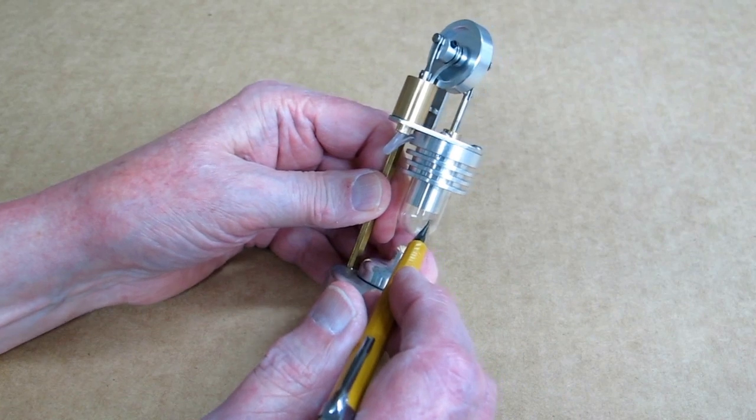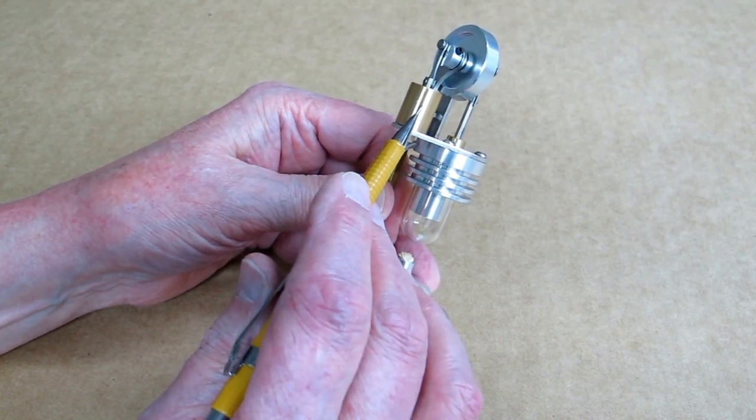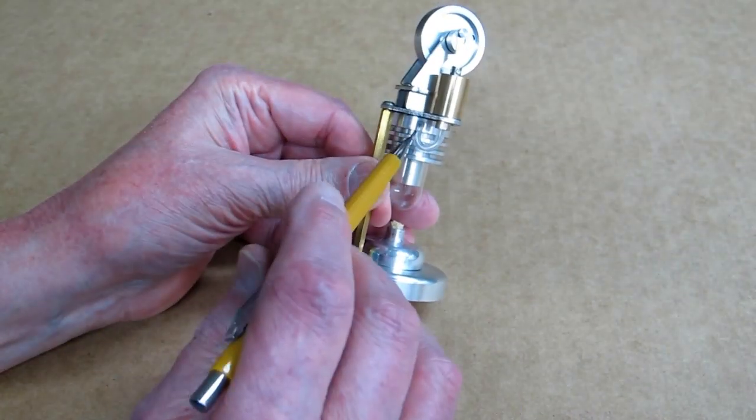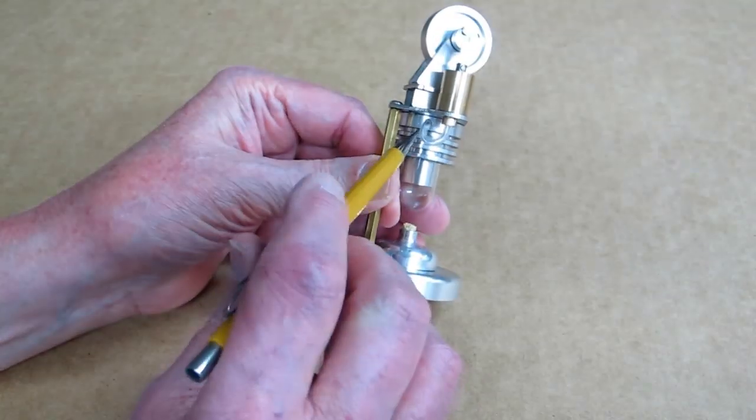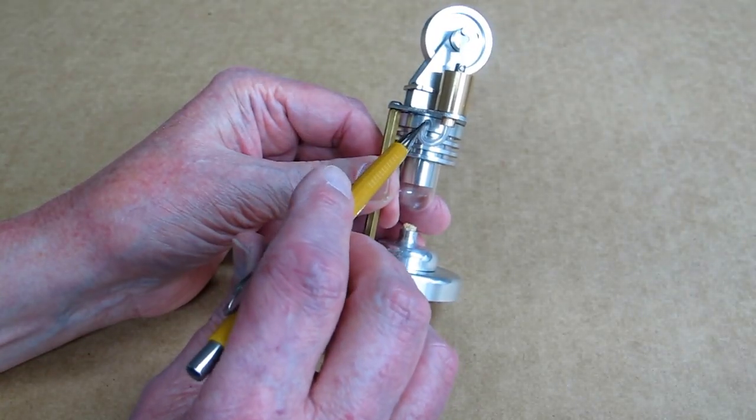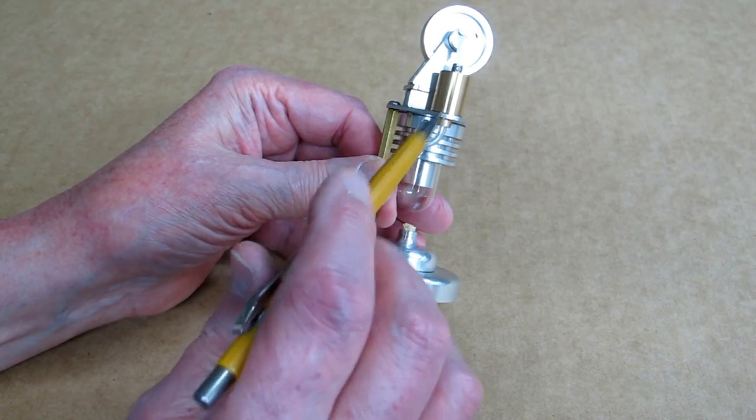So you have the hot cylinder and the cold cylinder, and this piece of what appears to be silicone tubing transfers air from the hot end to the cold end, back and forth.